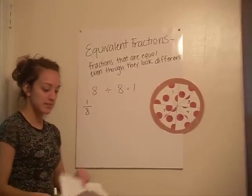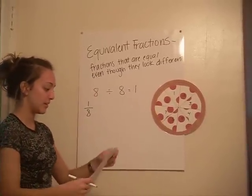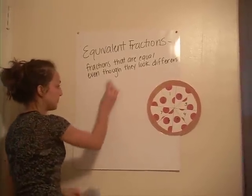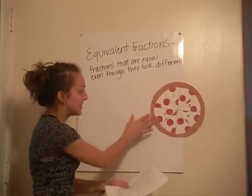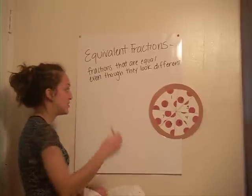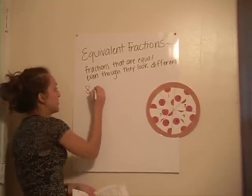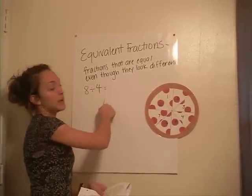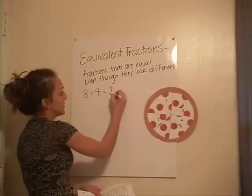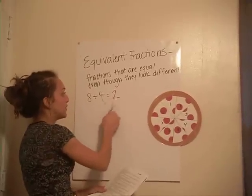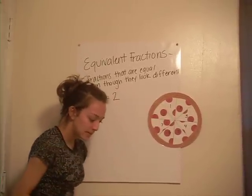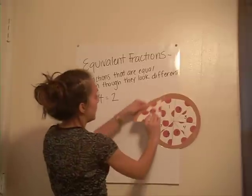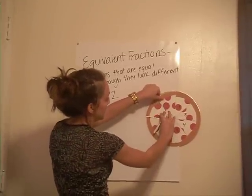Now let's move on to another fraction. What happens if we have the same 8 slices of pizza, but only 4 friends to share with? We have 8 slices of pizza and we're dividing it among 4 friends. 8 divided by 4 — and we all know that's 2 — so each person will get 2 slices.